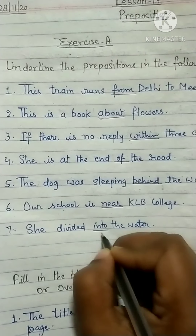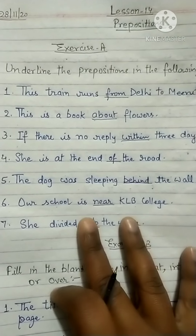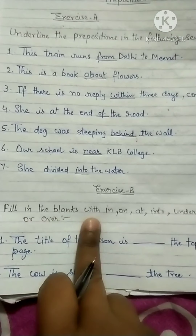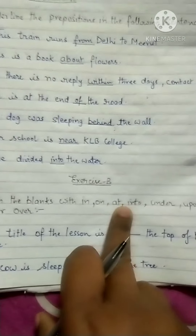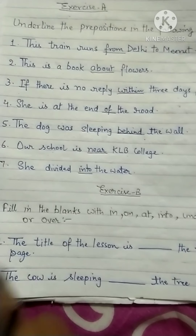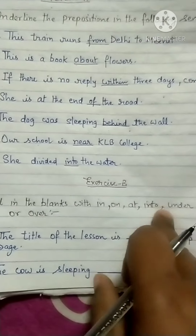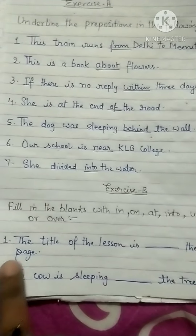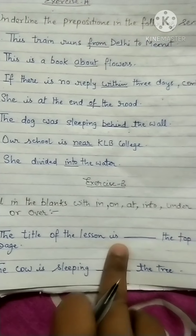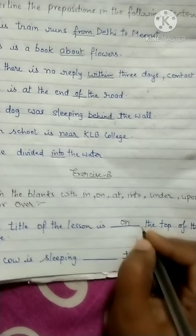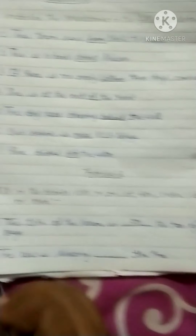Now come to the next exercise, Exercise B. In this, fill in the blanks with: in, on, at, into, under, upon, and over. These are the preposition words which you have to fill into the blanks. The title of the lesson is on the top of the page.